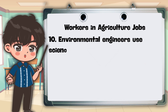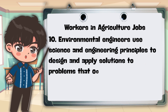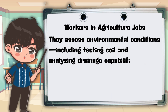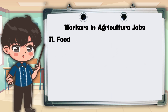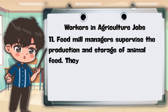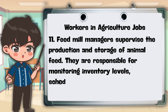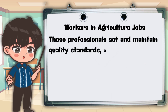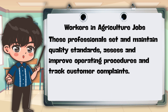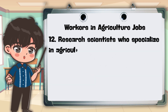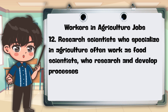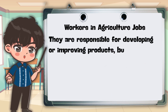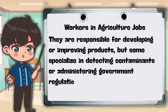10. Environmental engineers use science and engineering principles to design and apply solutions to problems that occur on agricultural sites. They assess environmental conditions, including testing soil and analyzing drainage capabilities, and develop improvements. 11. Feed mill managers supervise the production and storage of animal feed. They are responsible for monitoring inventory levels, scheduling feed production, and inspecting the quality of the grain. These professionals set and maintain quality standards, assess and improve operating procedures, and track customer complaints. 12. Research scientists specialize in agriculture and often work as food scientists. They research and develop processes for manufacturing, storing, and packaging food. They are responsible for developing or improving products, but some specialize in detecting contaminants or administering government regulations.